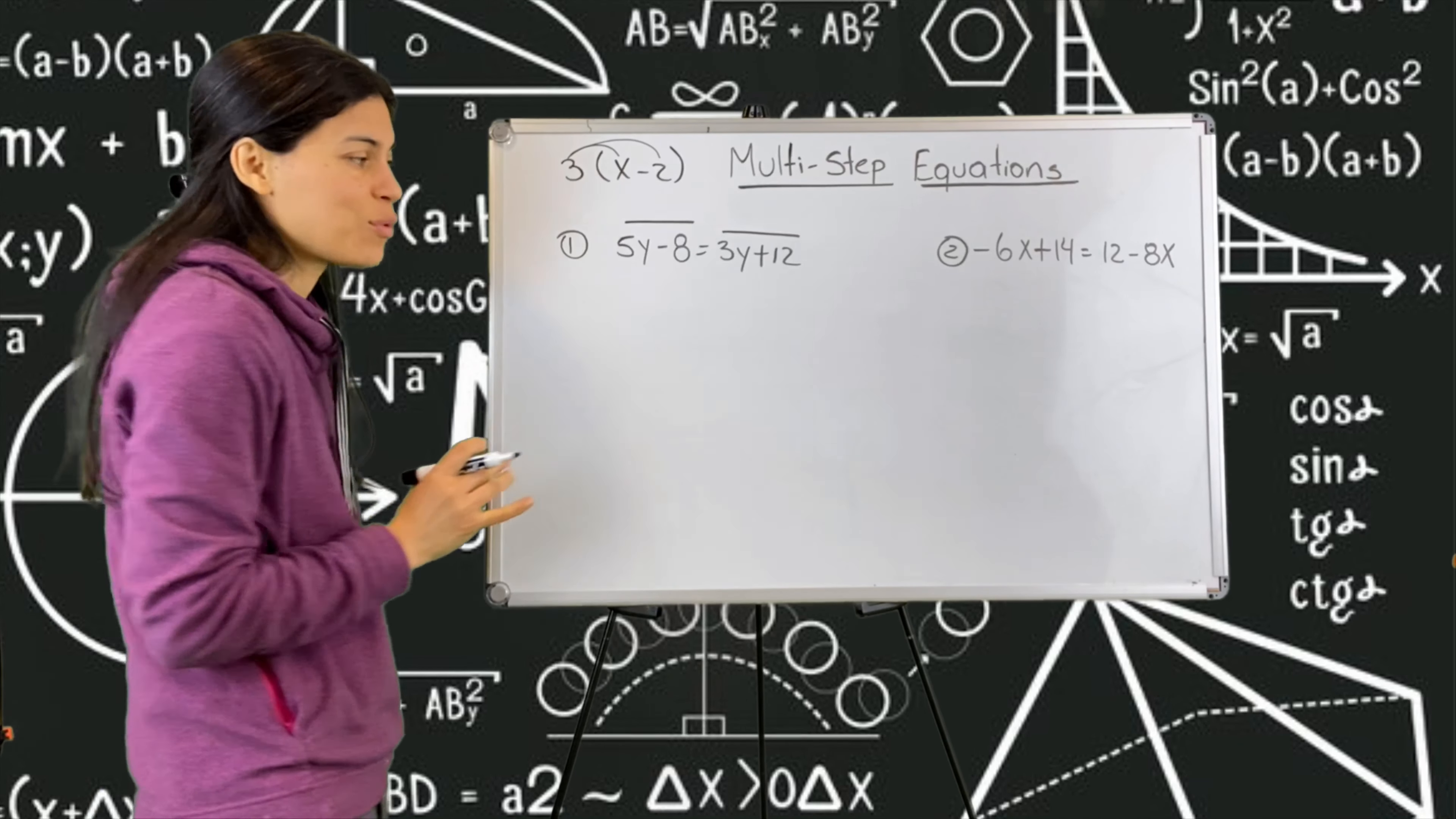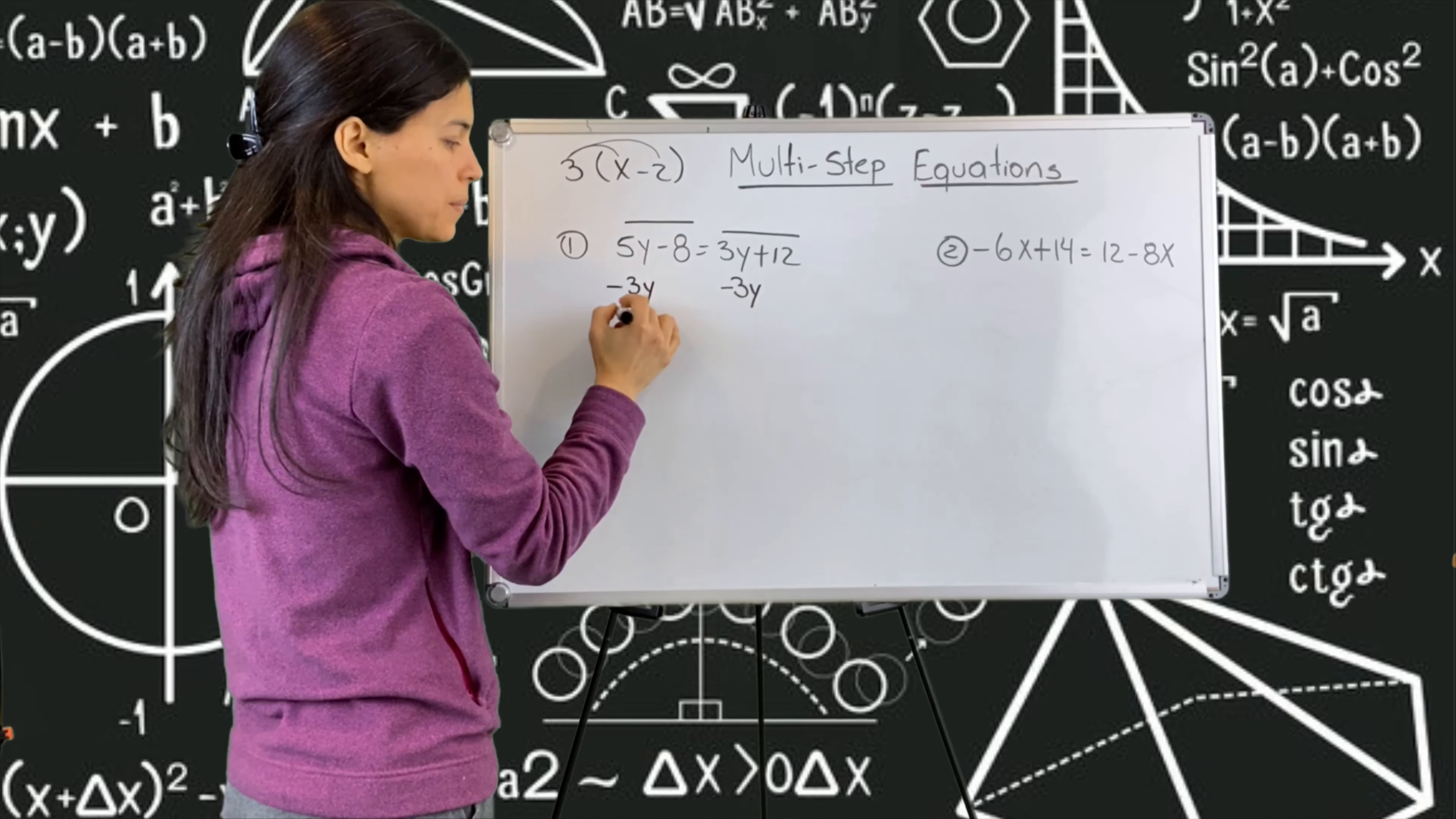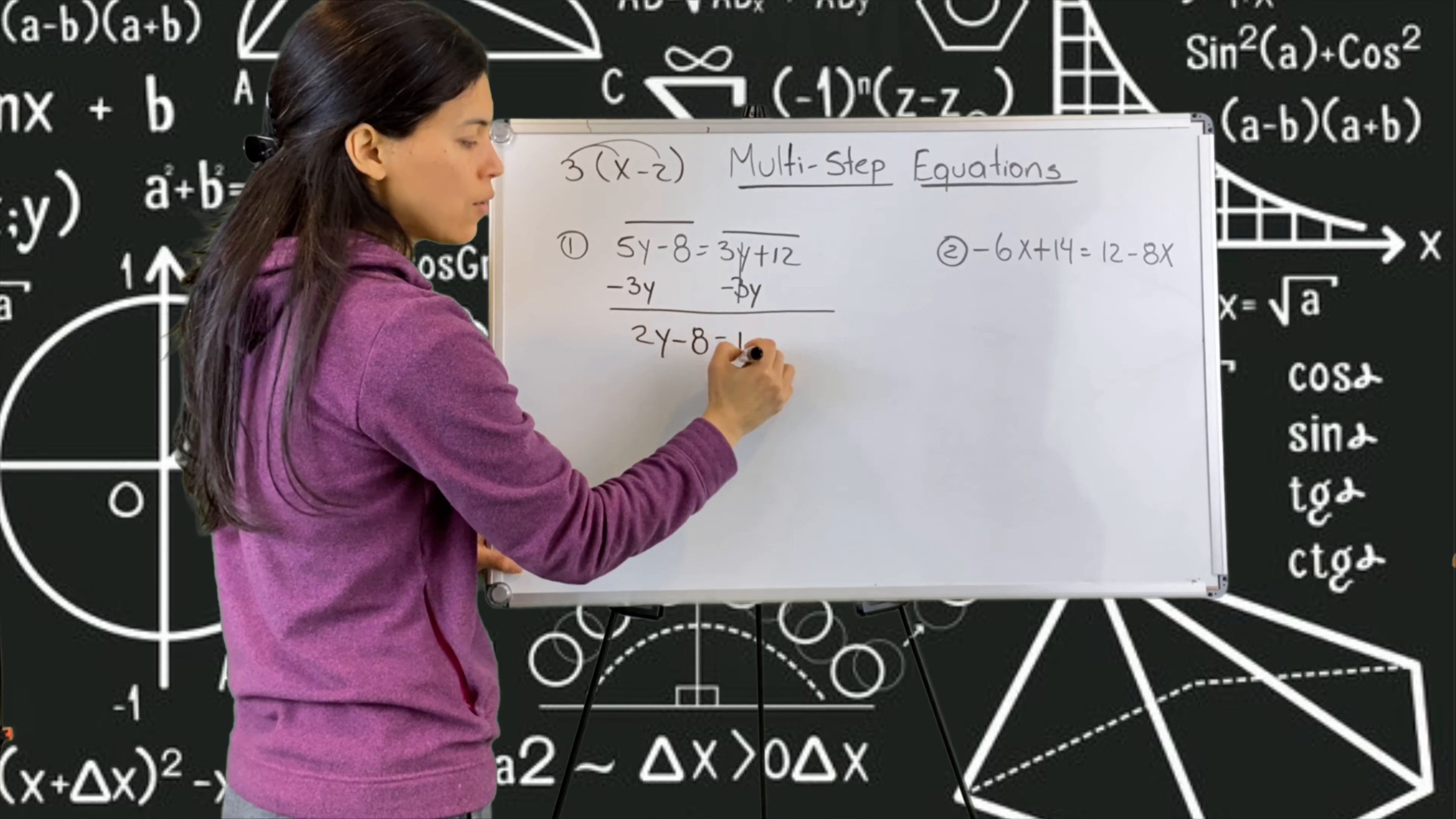Since I like to have my variables on my left, I'm going to get rid of this three y. Variables is the unknown. I'm going to get rid of the three y by doing the opposite operation. A negative three will undo. And I need to do that on both sides. This will eliminate the y's, my variable on this side. And over here, I do 5y minus 3y gives me two y's. I bring down the minus eight, put the equal. And over here, I only have the 12 left.